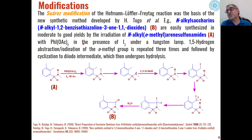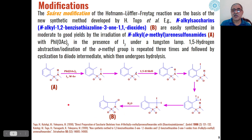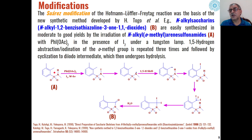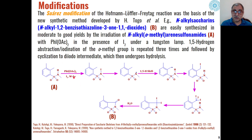There are some modifications used in HLF methodology. The most common among these modifications is the Suárez modification. Here, N-alkyl-saccharins can be synthesized from N-alkyl-ortho-methyl-arene-sulfonamides. When these sulfonamides are reacted with phenyl iodoacetate in the presence of iodine under a tungsten lamp, first through free radical reaction H radical is removed and N-iodo-derivatives are formed.